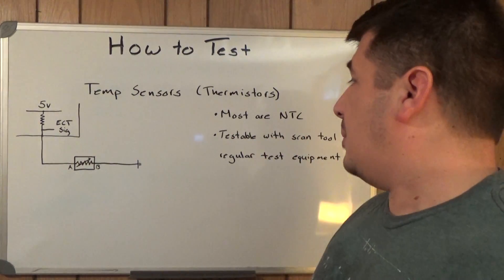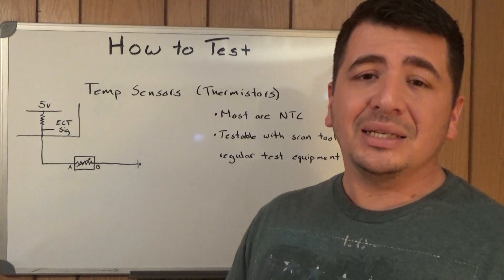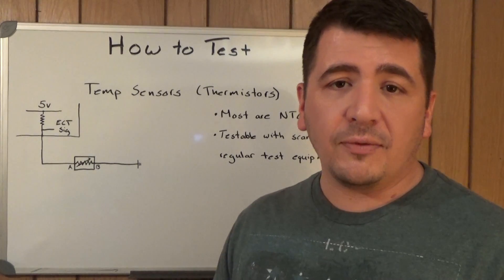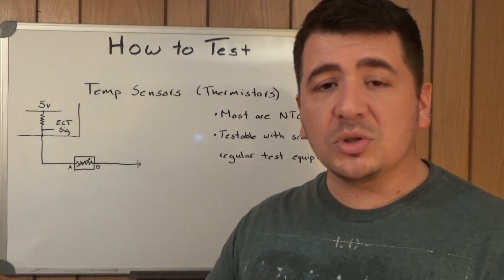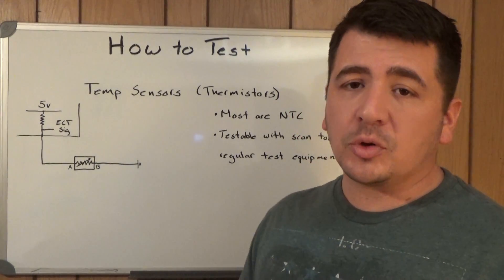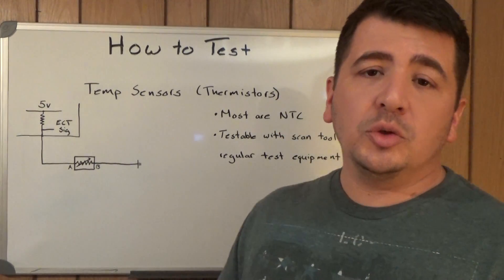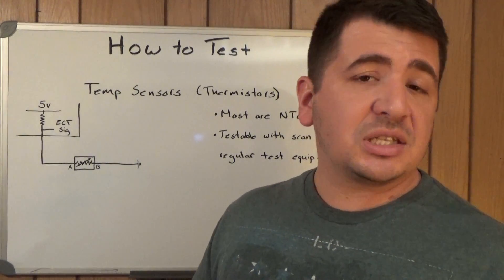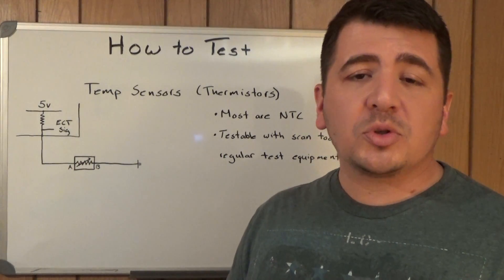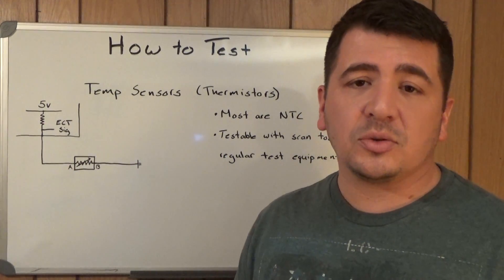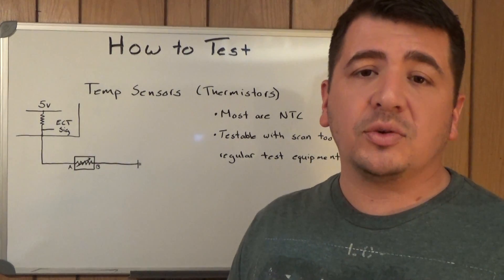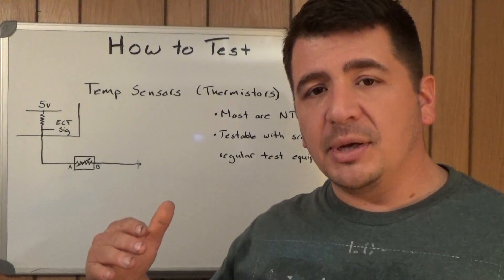Most applications that you're going to run into are going to be NTC thermistors. NTC means negative temperature coefficient. It simply means that as the temperature goes up, the resistance goes down. PTC, which would be positive temperature coefficient, would do the opposite. As temperature would go up, resistance would go up. But for automotive applications, you're almost always going to run into NTC temperature sensors. Just know that as the temperature rises, the resistance value will almost always be going down.